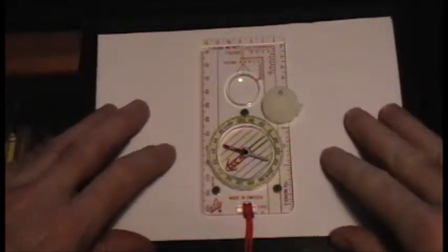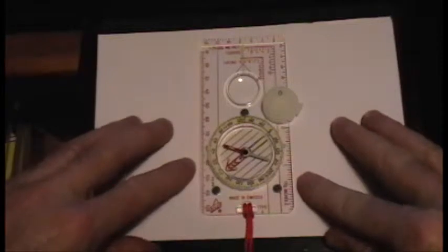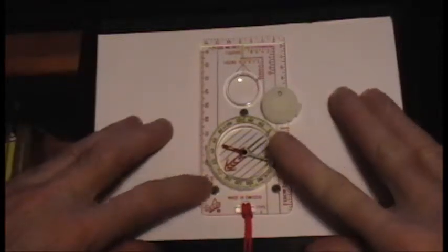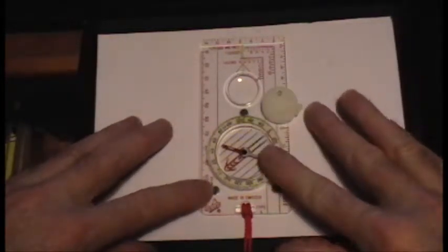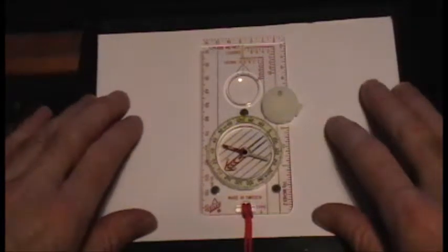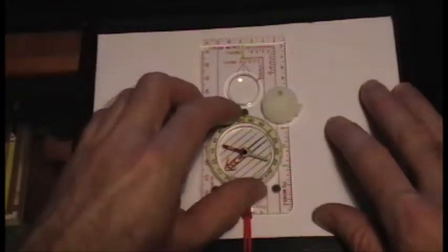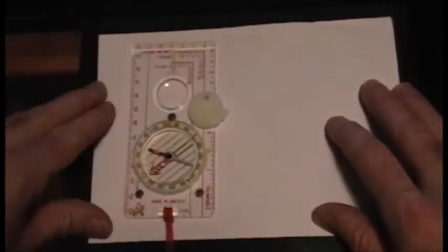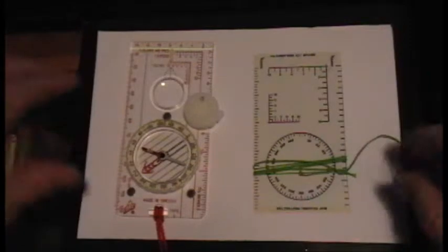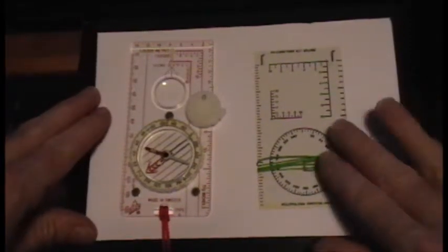In map and compass work to find a grid bearing, many people use a compass. It's a very straightforward procedure, but there's also something else that you can use to find a grid bearing, and that is a protractor.